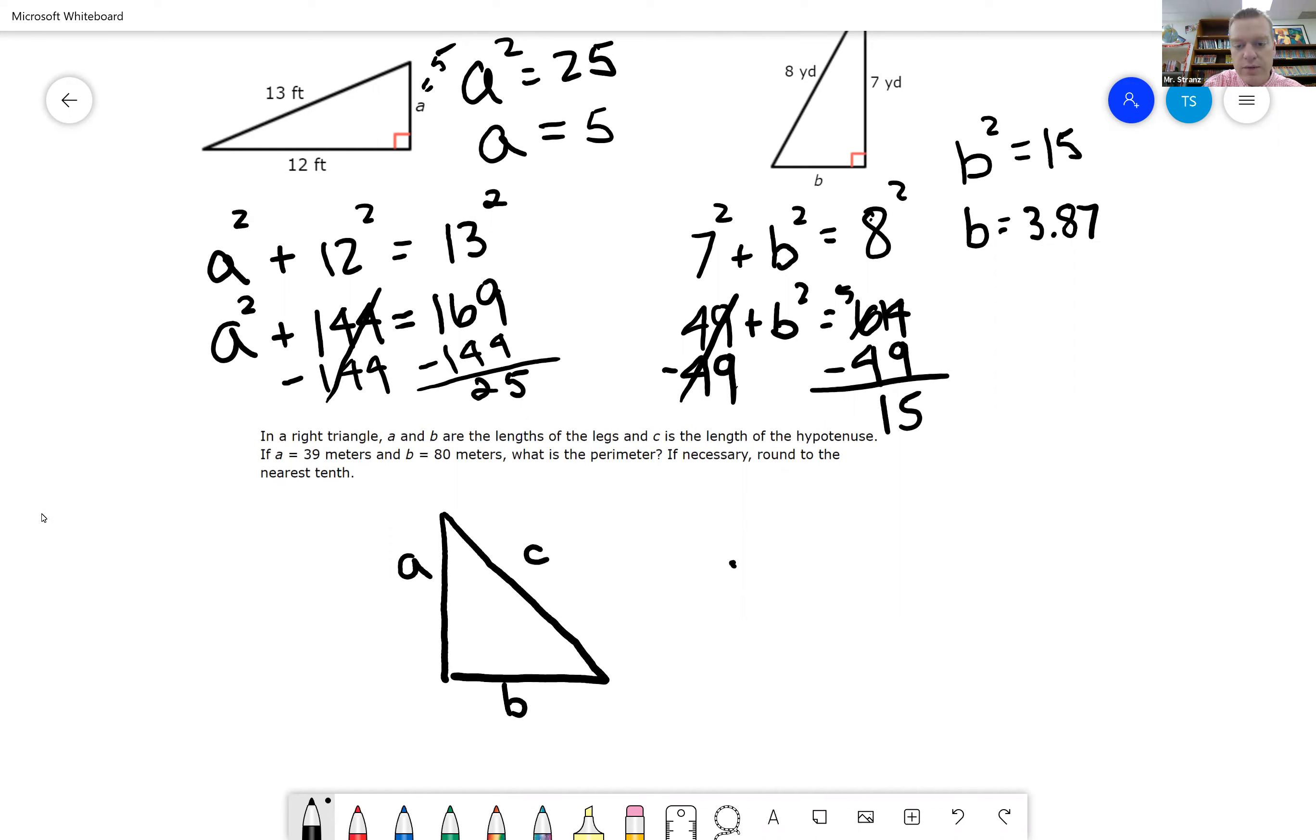If A is 39, so I have 39 squared plus B squared, which is 80 squared, we need to figure out what C is going to be, and they actually want to know what the perimeter is going to be.